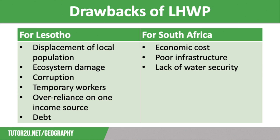There has also been ecosystem damage, as the wetland ecosystem downstream that depends on regular flooding has been destroyed due to reduced water reaching that part of the river basin. Corruption has been an issue: compensation money set aside for displaced communities has often not reached those it was intended for, and what was received was too little and too late. Temporary workers have also caused problems, with alcoholism and the spread of HIV and AIDS rife in informal settlements around construction sites.